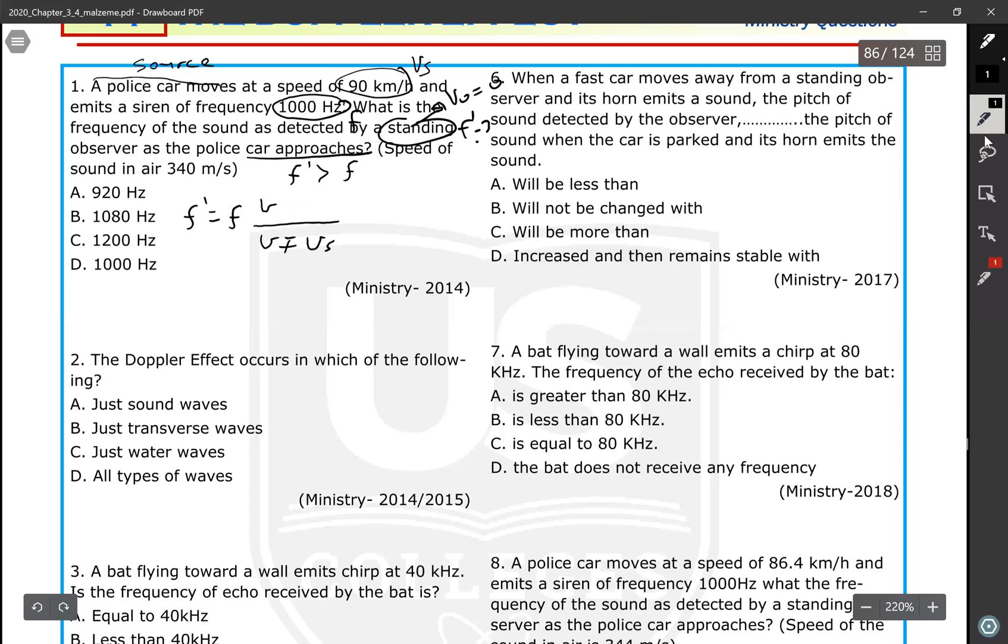I know that f prime is greater than f. To make it greater, the denominator must be less than numerator. So that's why you should subtract to make denominator less than numerator. In this case, f prime will be greater than f. After that, you are going to write the given values into the equation and you will find what f prime is.